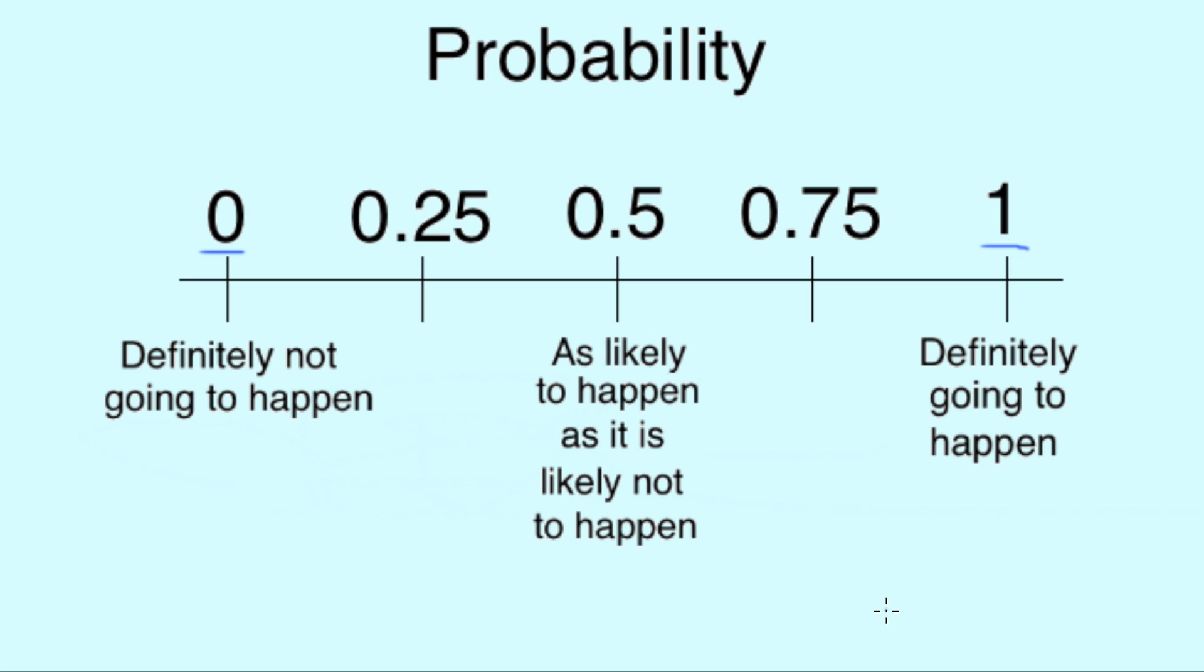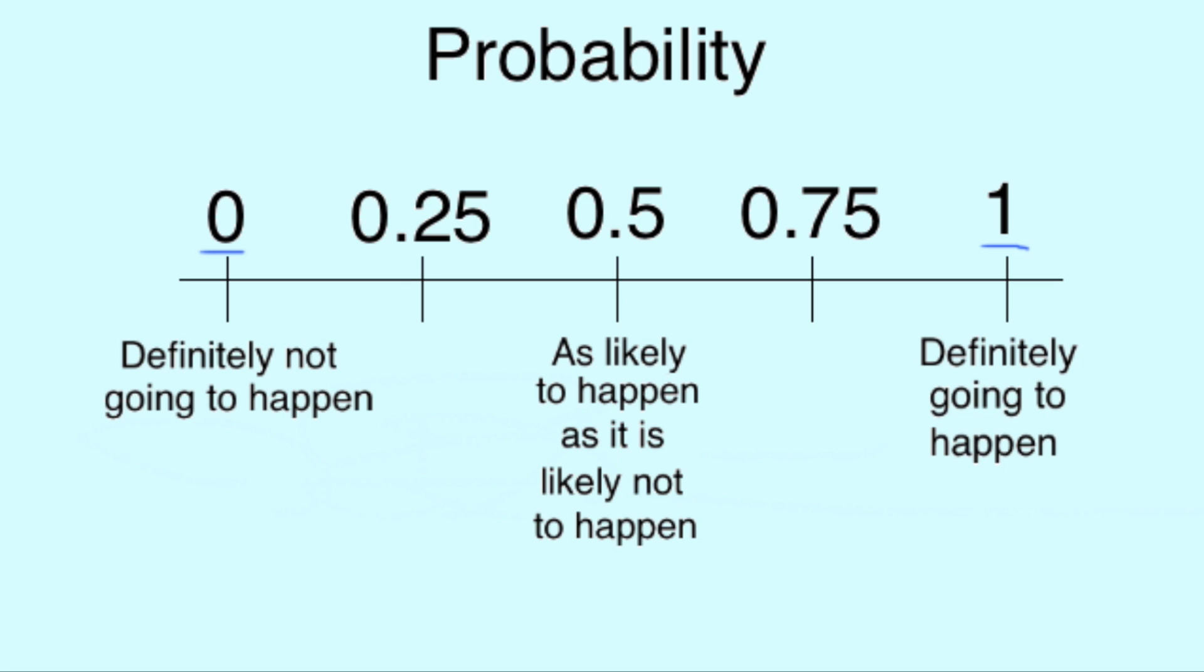If an event is as likely to happen as it is likely not to happen, the chances of it happening are 0.5. There is a small gap between 0 and 0.5 where it is unlikely that an event will happen.